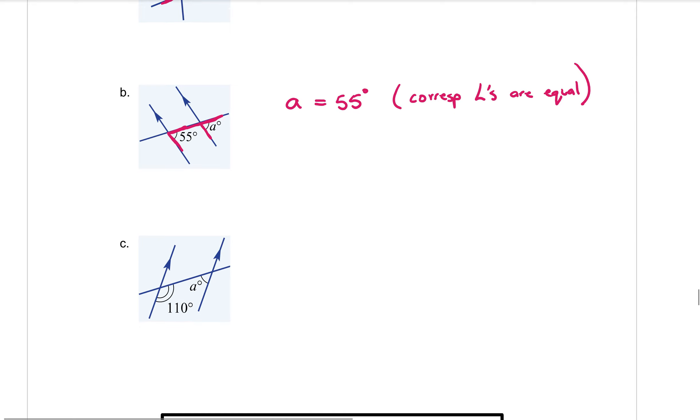And part C. Let's draw the arms on there. And the other one. Okay, so that's a C shape. A little bit turned around, but it is a C shape. Which means that those two angles add to give 180 degrees.